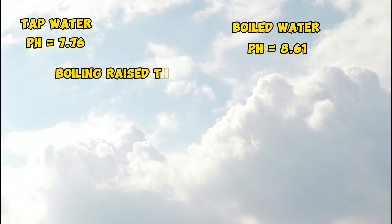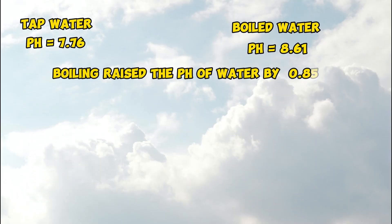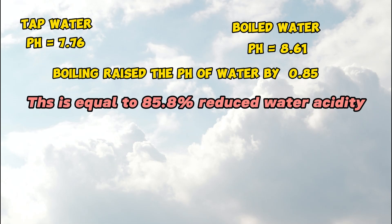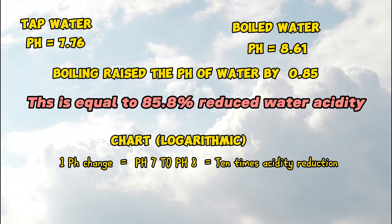Boiling raises the pH of water by 0.85. This is equal to 85.8% reduced water acidity. Here's a comparison of the pH change to acidity.